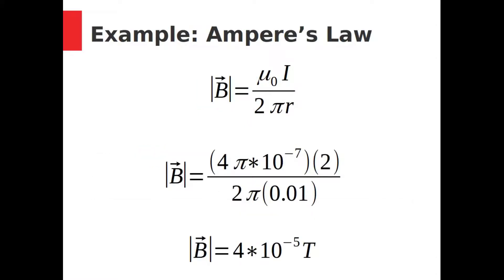This equation is easy enough to use. If you have a current of 2 amps and you are located 0.01 meters away from the wire, you will feel a magnetic field of 4 times 10 to the power of negative 5 tesla. But as you probably noticed, this equation only gives you the size of the field. Fields are vectors, so we need to find the direction of the magnetic field as well.